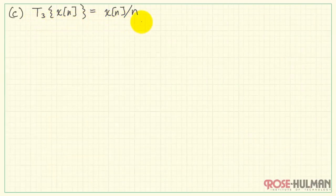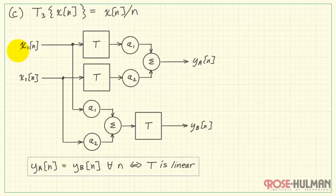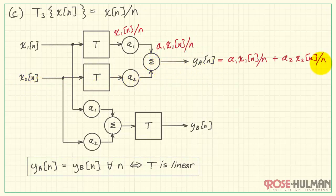Our third system, T3 operates on X of N by dividing each value of X by N. So in a similar procedure as before, we pass X1 through the system, multiply it by A1. Same for X2, and then add those two together. This input to the lower version of T is the same as before. And we have this result.